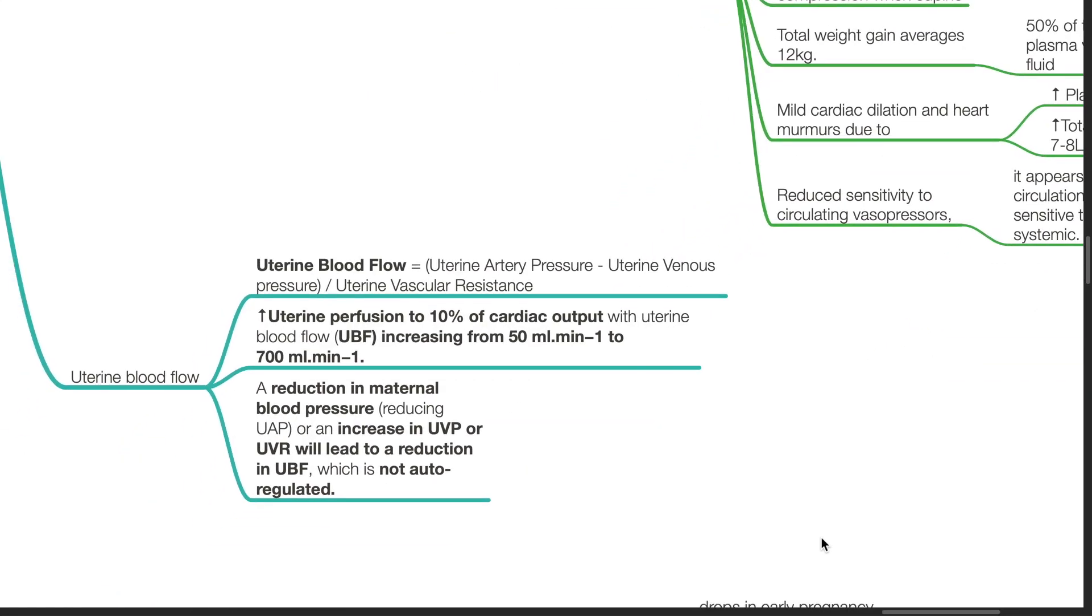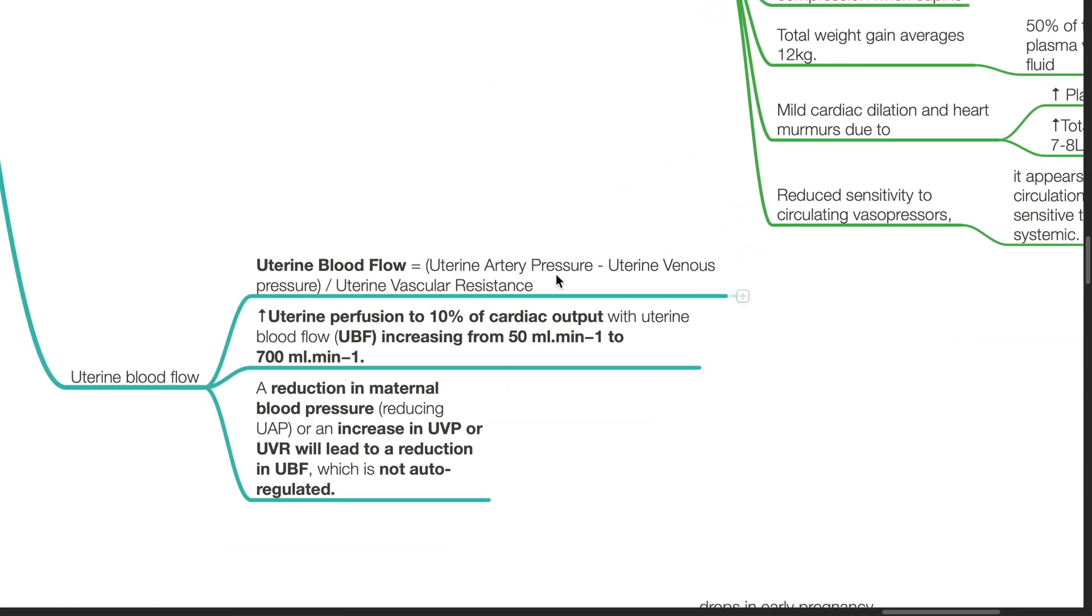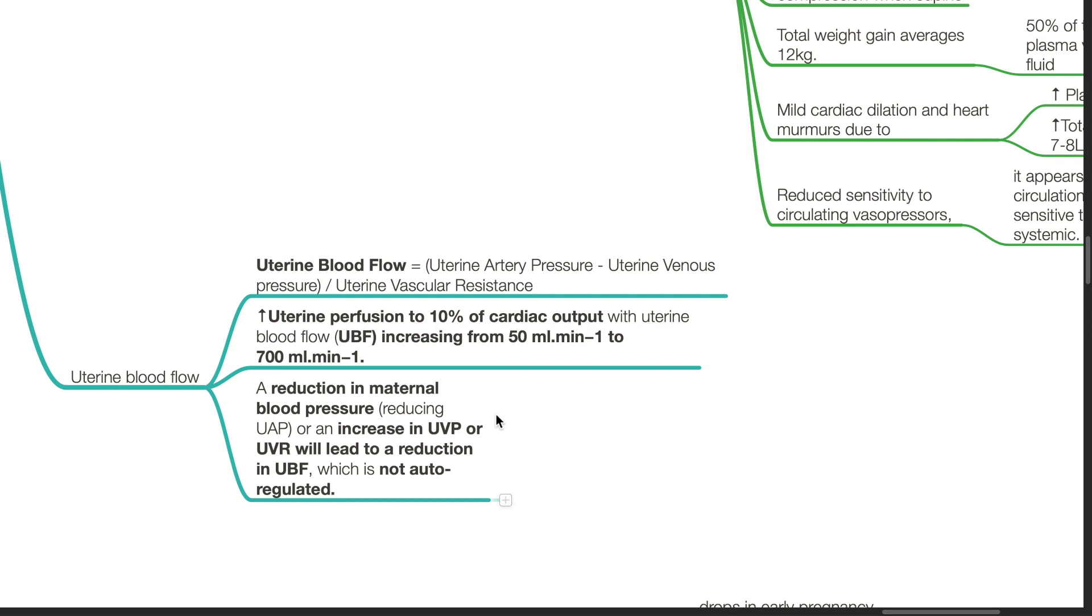Uterine blood flow can be defined as uterine artery pressure minus uterine venous pressure divided by uterine vascular resistance. Increase of uterine perfusion to 10% of cardiac output with uterine blood flow increasing from 50 mL per minute to 700 mL per minute. A reduction in the maternal blood pressure or an increase in UVP or UVR will lead to a reduction in UBF, which is not autoregulated.